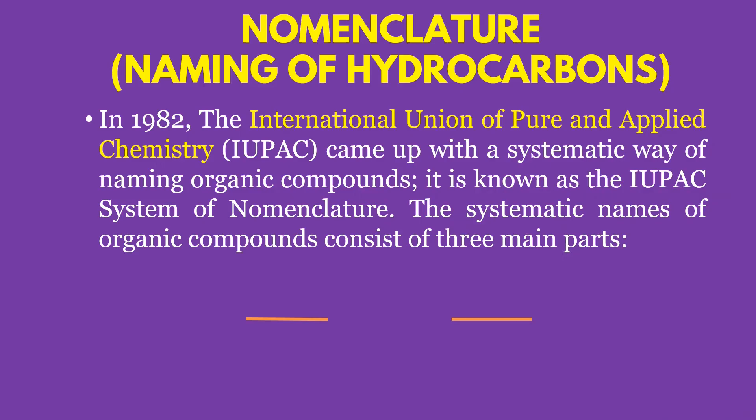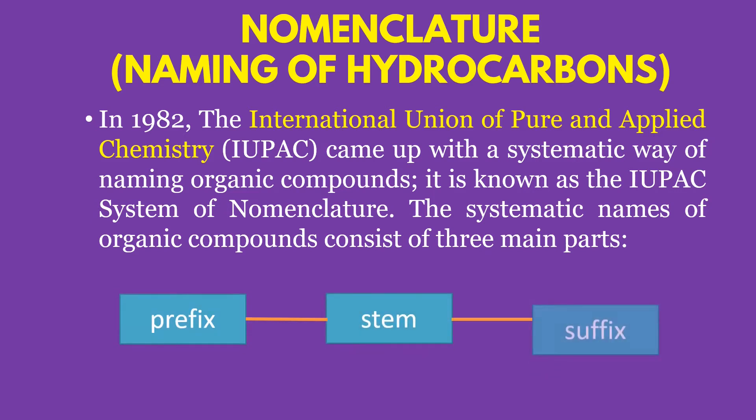Aside from drawing the structural formula of an organic compound, we should also know how to name hydrocarbons. In 1982, the International Union of Pure and Applied Chemistry, or IUPAC, came up with a systematic way of naming organic compounds known as the IUPAC system of nomenclature. The systematic names of organic compounds consist of three main parts: prefix, stem, and suffix.